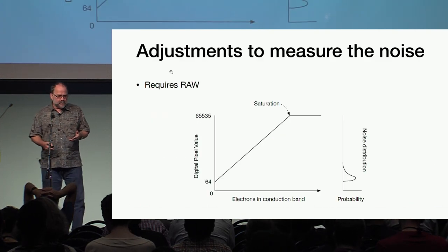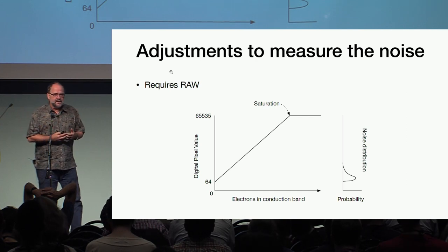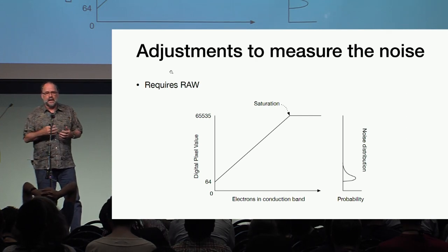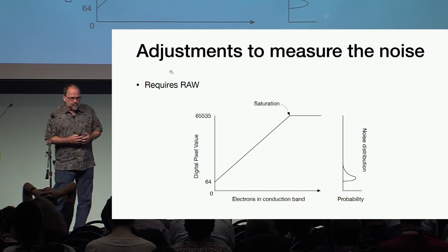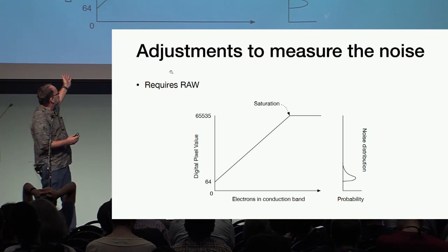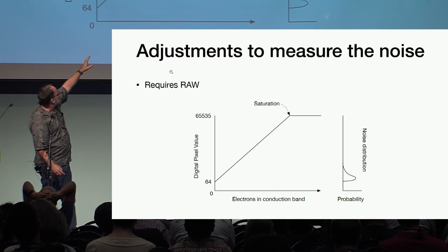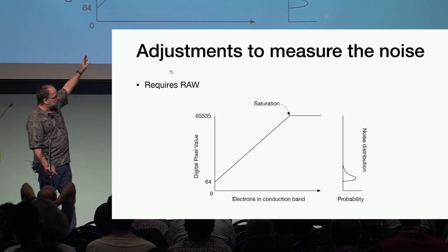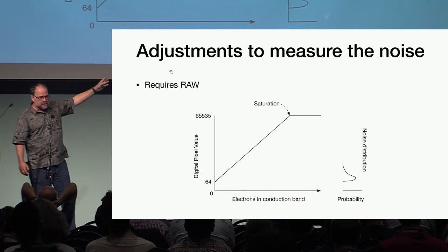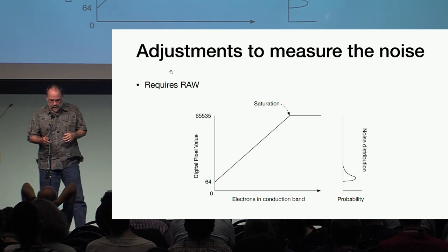The idea is that we can take any CCD sensor that has a raw output, basically adjust the amplifier so that with zero electrons you get a digital number out. And as you increase the number of electrons up to saturation, you get a Poisson distribution of values.